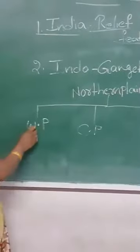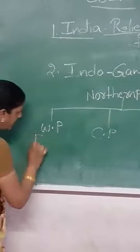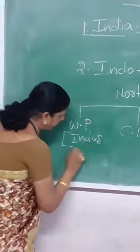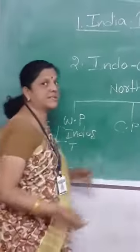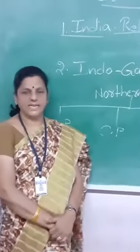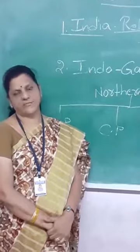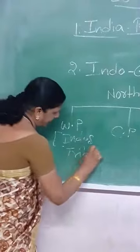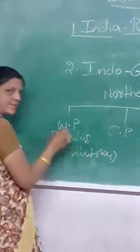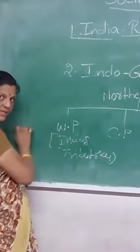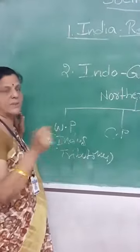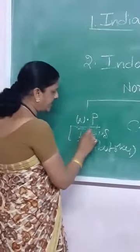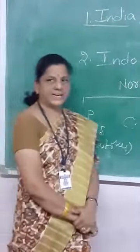The Western Part is composed of the Indus River and its tributaries. The tributaries of Indus are Jhelum, Chenab, Ravi, Beas, and Sutlej. Most of the Indus River is flowing in Pakistan; only a small portion lies in Punjab and Haryana plains in India. So the Western Part is formed by the Indus and its tributaries.